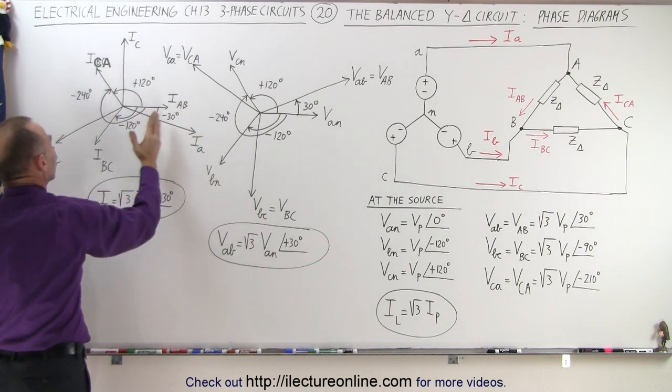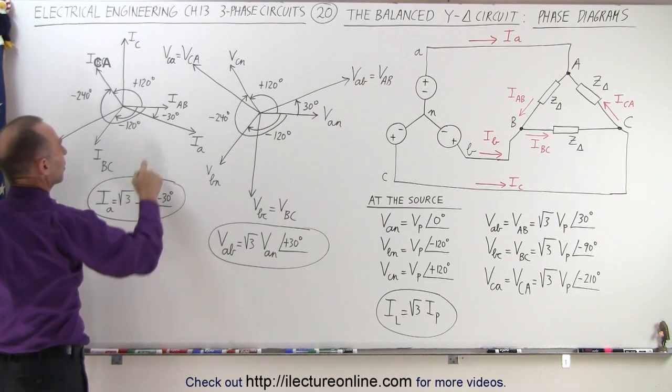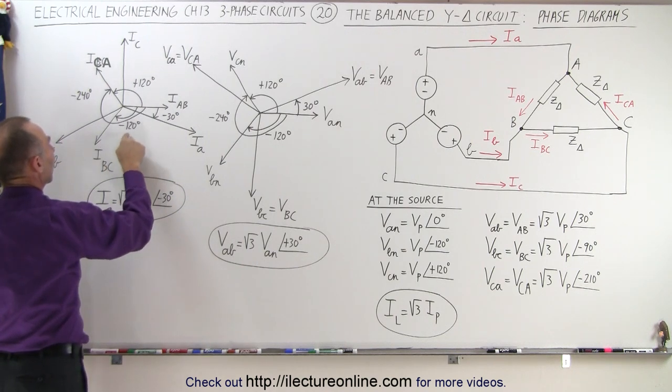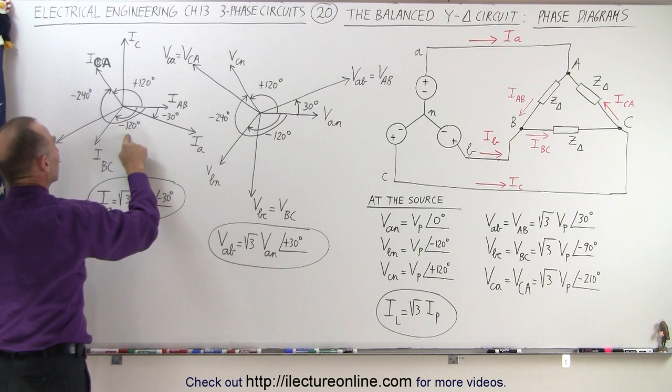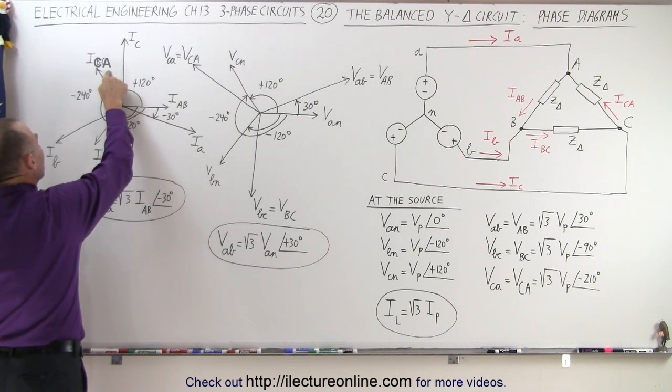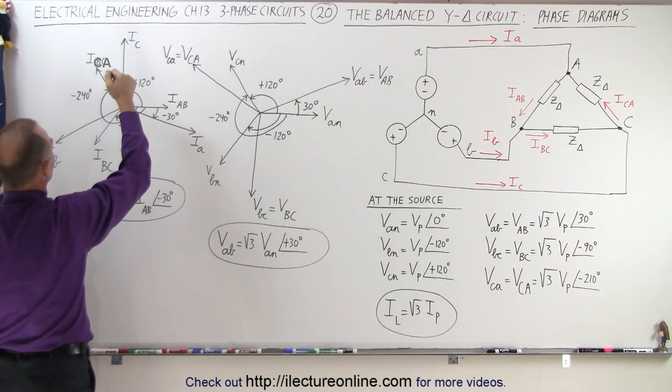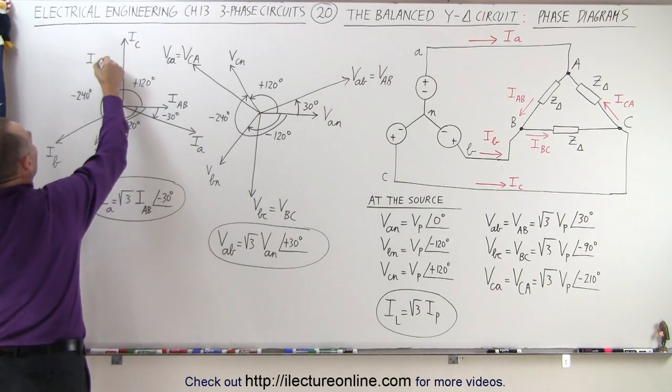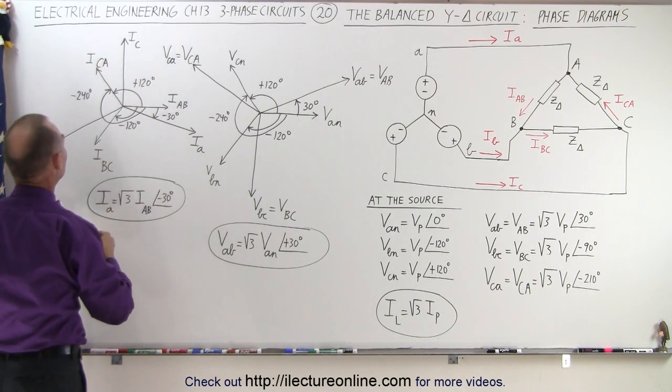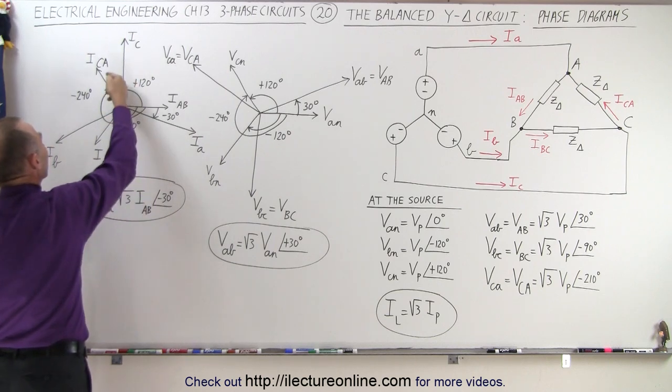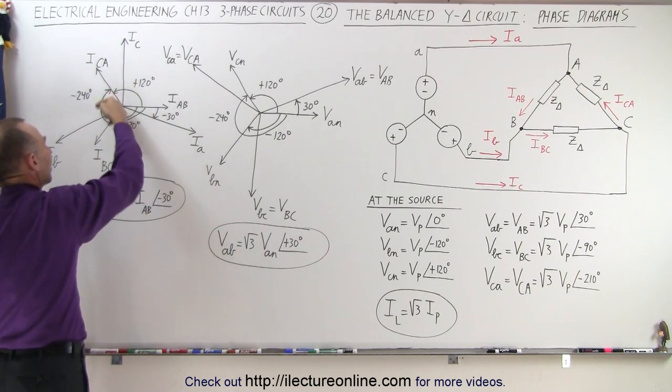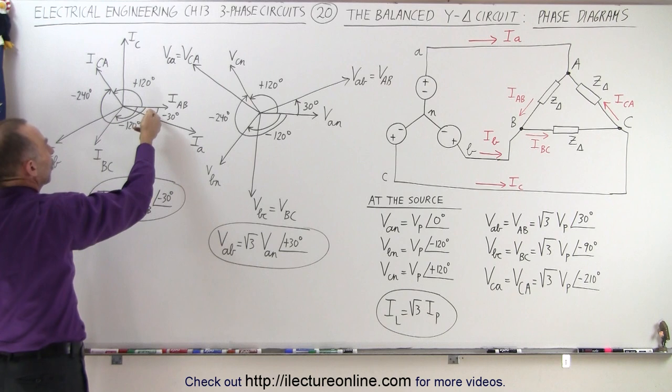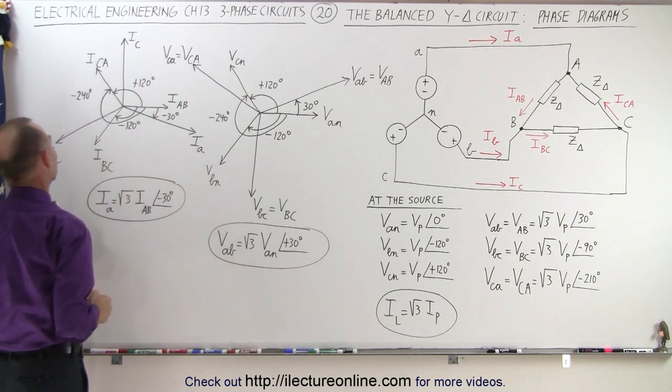And of course, the pairs are separated by 120 degrees. IBC lags IAB by 120 degrees. And IBC... oh, that's not correct either. This should be ICA. There we go. And ICA lags IBC by 120 degrees, so that's a total phase angle lag of 240, or we can call it a lead angle of 120 degrees.